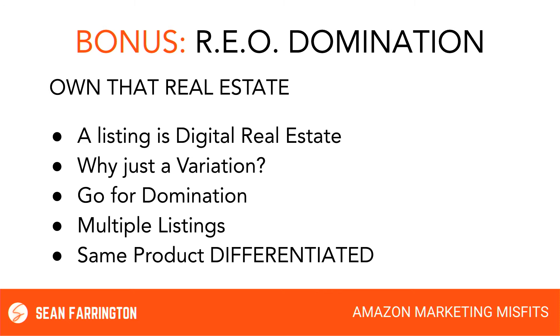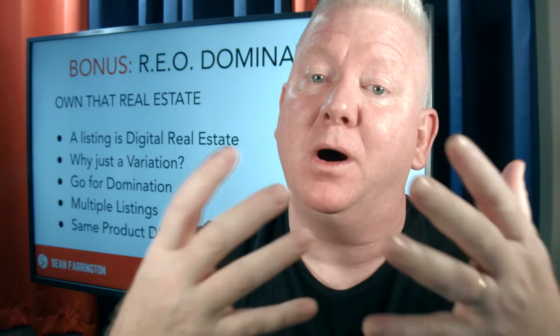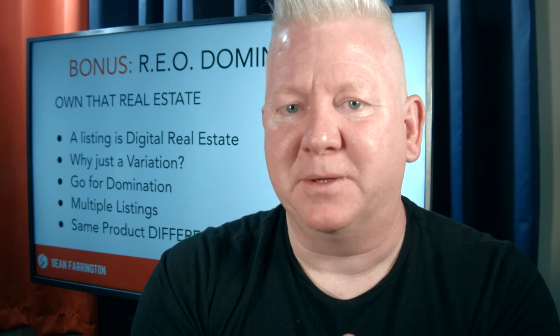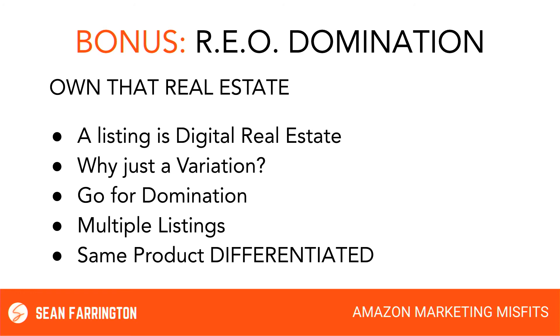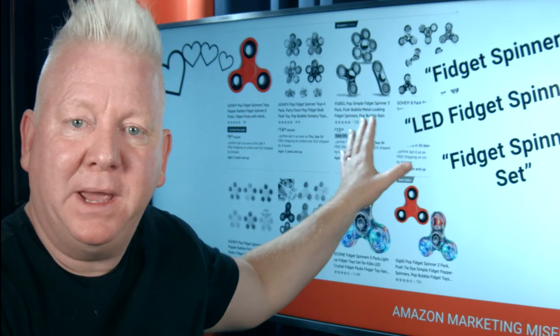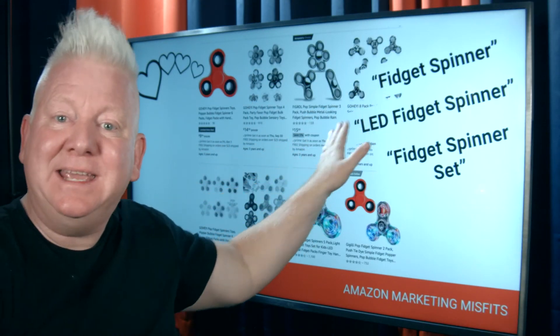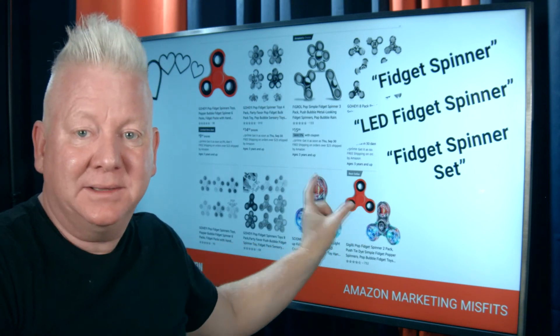Owning real estate on Amazon comes from multiple listings and having the same product differentiated. This strategy has worked over and over again. There was a textile manufacturer who owned all the top positions on page one for the search term 'towels.' They created multiple listings focused on the same SEO set for towels that would land them on page one — the same product over and over again. There was a bit of an advanced strategy involved; hit me up inside the group if you're interested. You don't need the advanced strategy to get results though. Using this strategy right can land you multiple pieces of real estate on page one. You can rank for 'fidget spinner,' for 'LED fidget spinner,' and if you group them together creating a bundle or kit listing, you can actually rank for 'fidget spinner set.'